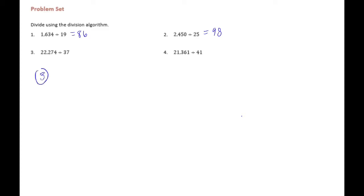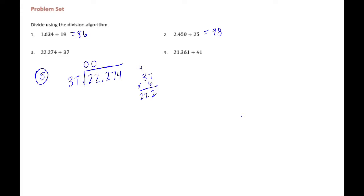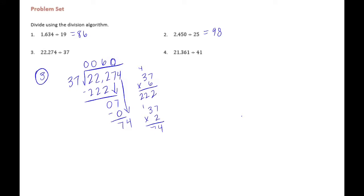Number three: 22,274 divided by 37. 37 can't go into 2 or 22, but it could go into 222. Let's try 6 times — 6 times 7 is 42, carry the 4; 6 times 3 is 18, plus 4 is 22. Subtract 222, we get 0. Bring down the 7 — 37 can't go into 7, so put a 0. Subtract, we still have 7. Bring down the 4 to get 74. 37 goes into 74 twice — 2 times 7 is 14, carry the 1; 1 times 3 is 6, plus 1 is 7. Goes in twice with no remainder. Answer is 602.